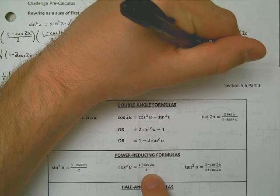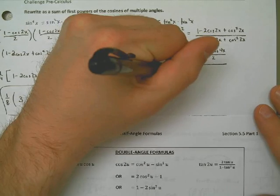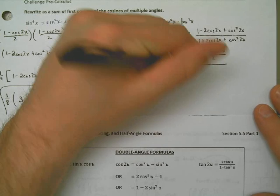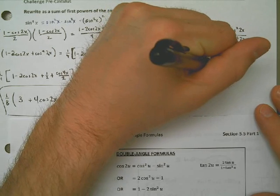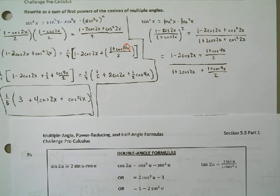Down here, same exact thing, except we have 1 plus 2 cosine 2x. Alright. Now, let's factor a 1 half out of the top. Let's factor a 1 half out of the bottom. Let's see where it gets us.